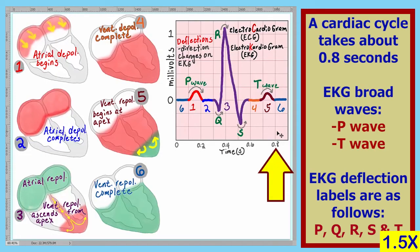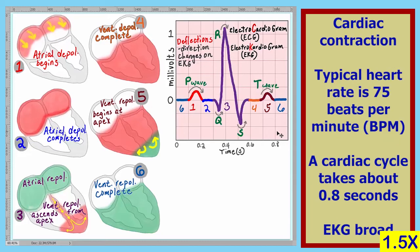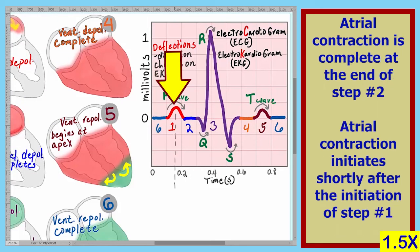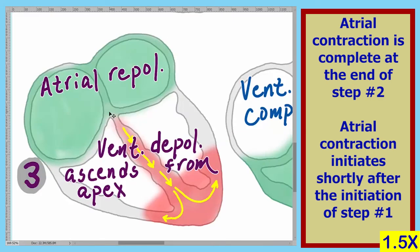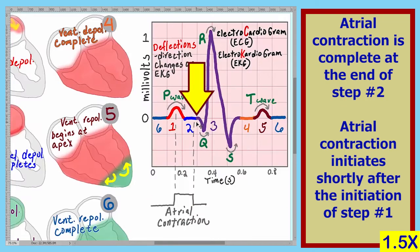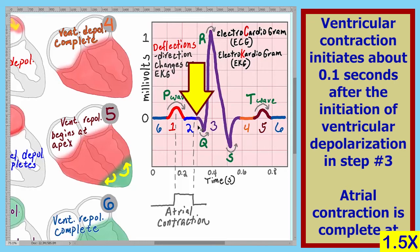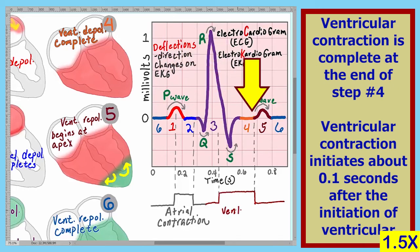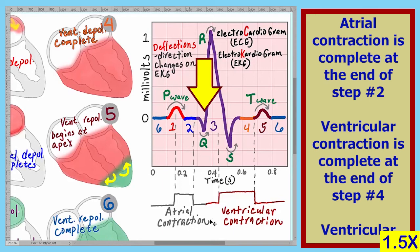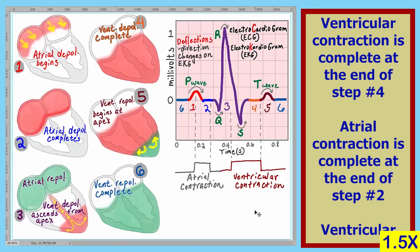An entire cardiac cycle takes about 0.8 seconds, giving a normal heart rate of 75 beats per minute. Let's show under this graph where the atria and the ventricles contract — remember, contraction will occur only after the electrical events. In step one, atrial depolarization begins, and atrial contraction begins in the middle of step one. Atrial contraction is complete during step two. Ventricular depolarization begins in step three, ascending from the apex. Ventricular contraction occurs about a tenth of a second later. Ventricular depolarization is complete in step four, and ventricular contraction is complete at the end of step four. So atrial contraction is complete at the end of step two, and ventricular contraction is complete at the end of step four.